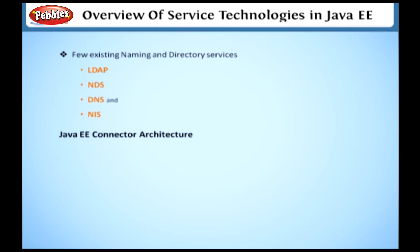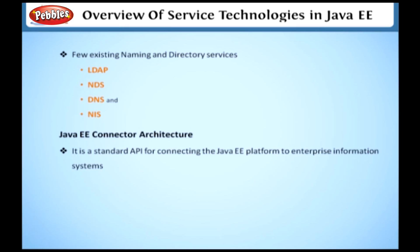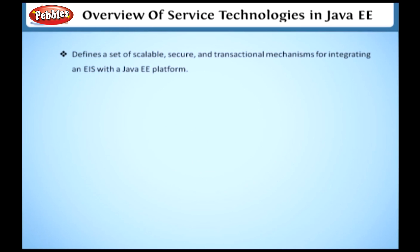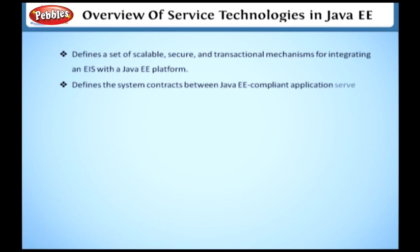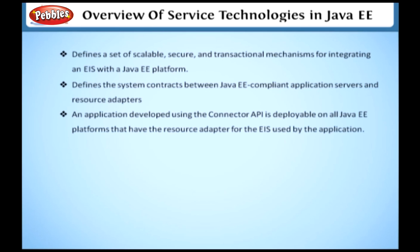Java EE Connector Architecture. The Java EE Connector Architecture is a standard API for connecting the Java EE platform to enterprise information systems, such as enterprise resource planning (ERP), mainframes, and database systems. It defines a set of scalable, secure, and transactional mechanisms for integrating an EIS with a Java EE platform. It also defines the system contracts between Java EE compliant application servers and resource adapters. An application developed using the Connector API is deployable on all Java EE platforms that have the resource adapter for the EIS used by the application.